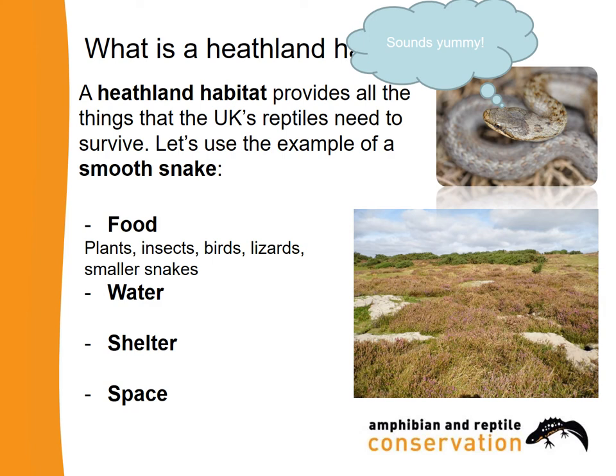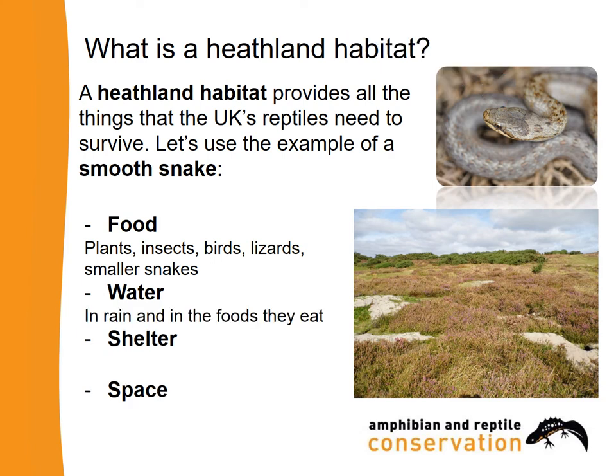And probably small snakes that eat the lizards. So the smooth snake — we know from a previous lesson — eats lizards and small snakes. That means these heathlands provide all the food they're going to need. Heathlands will also provide all the water that they need, either in rain or inside the foods that they eat.